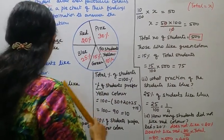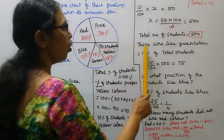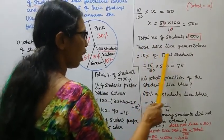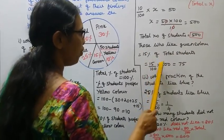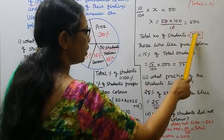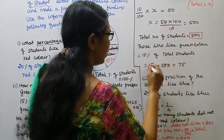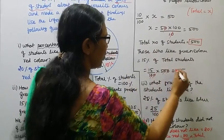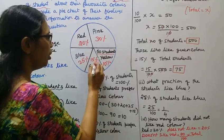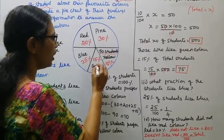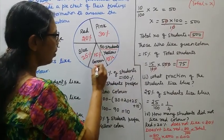Next question: How many students like green color? Those who like green color are 15% of total students. 15 by 100 into 500. 15 into 5 equals 75. So 75 students like green color.